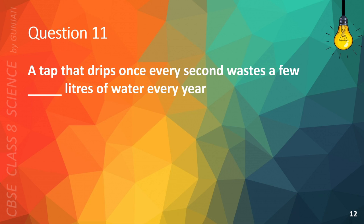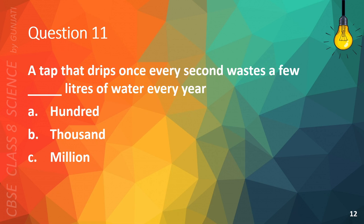Question 11. A tap that drips once every second wastes a few blank liters of water every year. A. Hundred. B. Thousand. C. Million. Or D. Billion. The correct answer is B. Thousand.